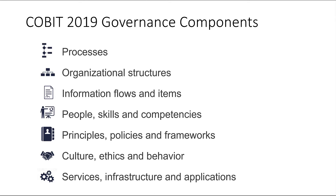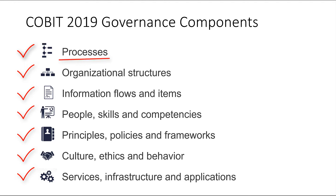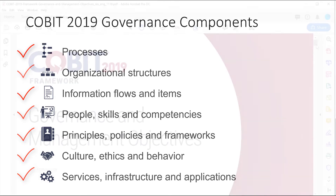Now we call them Governance Components, and these components are: Processes; Organizational Structures; Information Flows and Items; People, Skills, and Competencies; Principles, Policies, and Frameworks; Culture, Ethics, and Behavior; and of course, Services, Infrastructure, and Applications. What we want to do is take each one of these components and associate them with each of our 40 Governance and Management Objectives, using Process as the entry point.